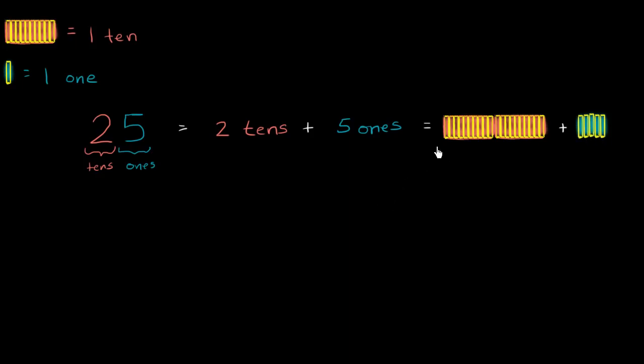And what is this going to be the same thing as? Well, two groups of ten is the same thing as 20, and this over here is equal to five. So once again, all ways to represent 25.